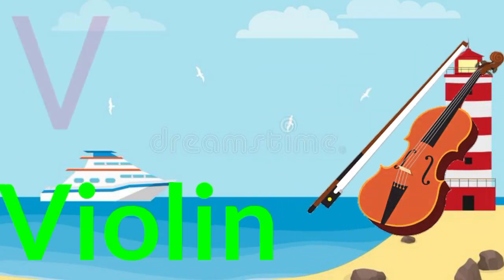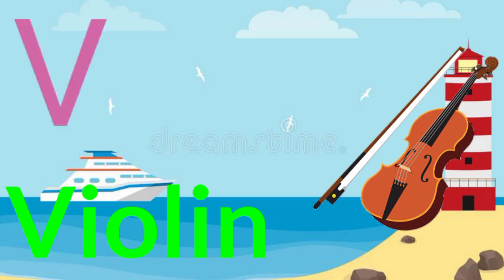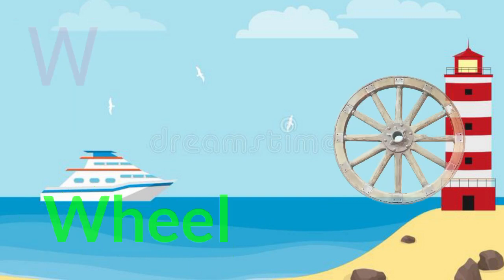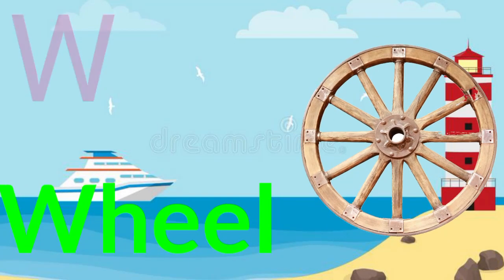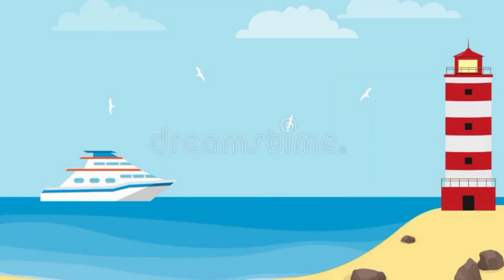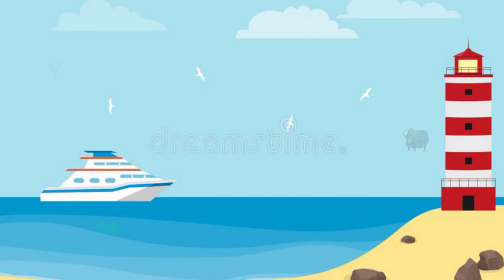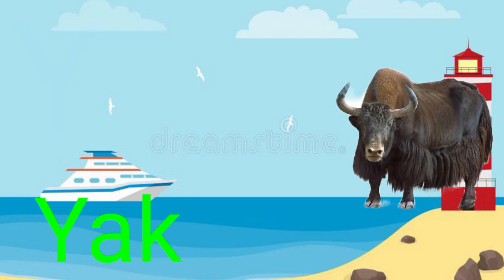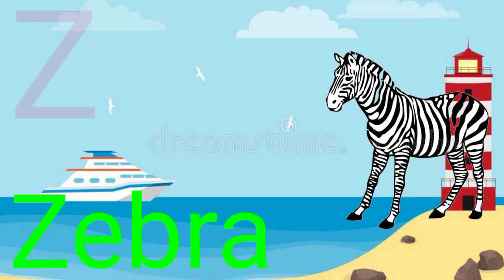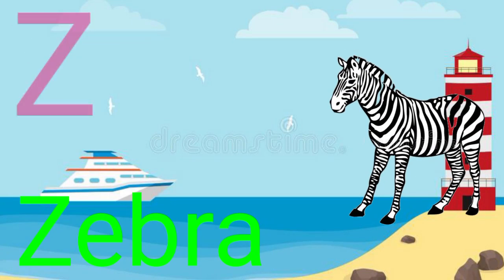U for umbrella, V for valiant, W for wheels, X for x-ray, K for yak, Z for zebra.